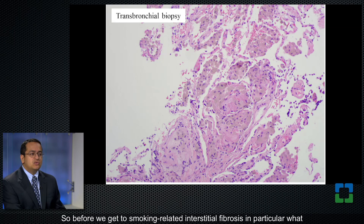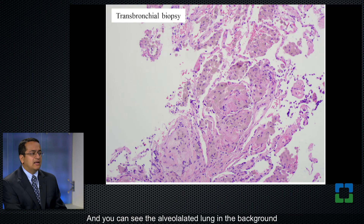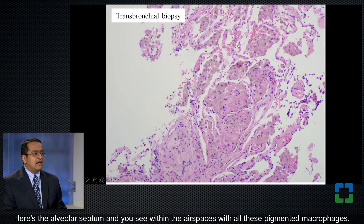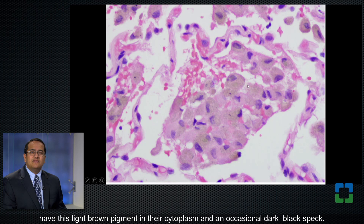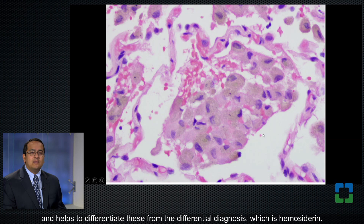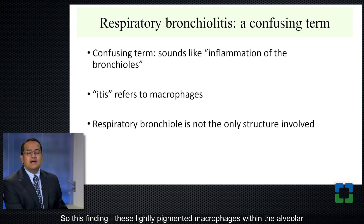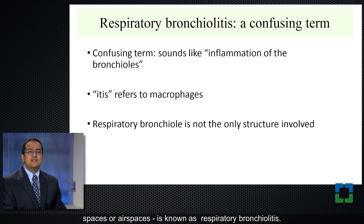Before we get to smoking-related interstitial fibrosis in particular, you should understand the concept of respiratory bronchiolitis. Here I'm showing you an image from a transbronchial biopsy. You can see the alveolated lung in the background, the alveolar septum, and within the airspaces are all these pigmented macrophages — light brown colored macrophages. At higher magnification, these macrophages have a light brown pigment in their cytoplasm and an occasional dark black speck. These findings of lightly pigmented macrophages within the alveolar spaces is known as respiratory bronchiolitis.